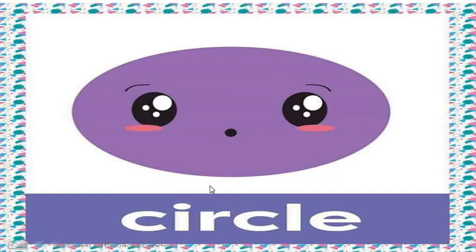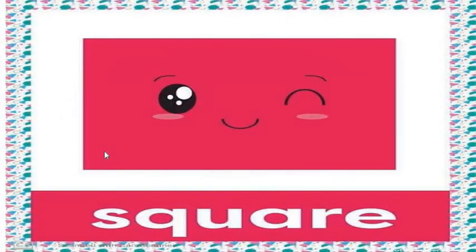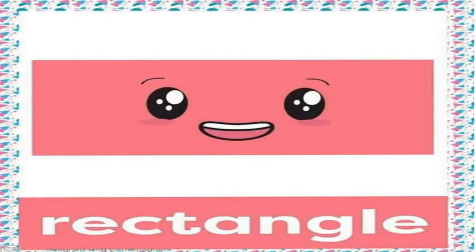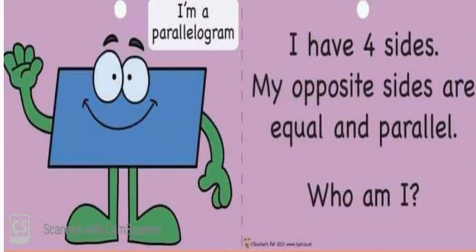Now look: this is a circle, square, triangle, rectangle. What does the square say? I have four sides. Where are the sides? Let me explain. This is one side, this is two, this is three, and this is four.